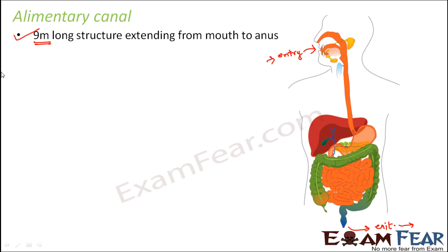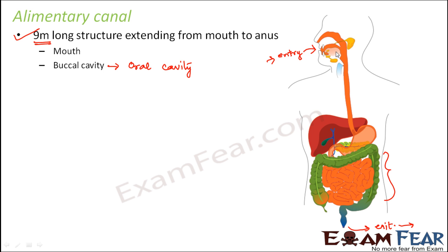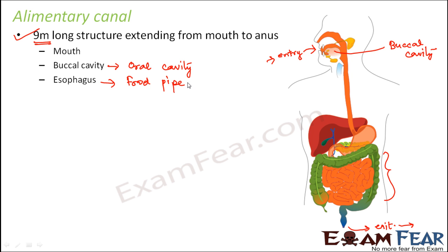You might wonder how a nine-meter tube fits inside our body. It is because in the middle section it is highly coiled, so it gets accommodated even within a body that is not even a few meters. The alimentary canal consists of various organs: first is the mouth, then the buccal cavity — also known as the oral cavity — and then the esophagus, also known as the food pipe, which carries the food.